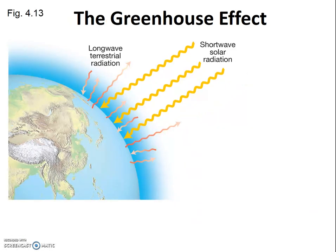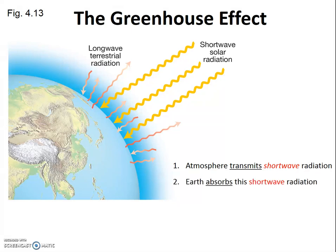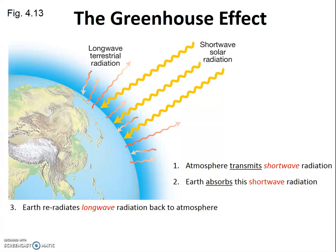Let's walk through, step by step, how the greenhouse effect works to warm our atmosphere. First, the Earth's troposphere transmits shortwave radiation — that's visible light from the Sun. This shortwave radiation is absorbed by the Earth and re-emitted as longwave radiation, i.e. thermal infrared.